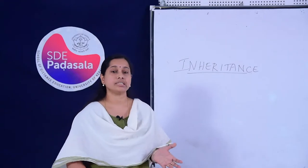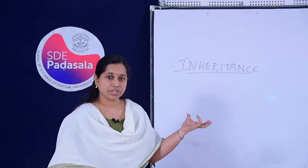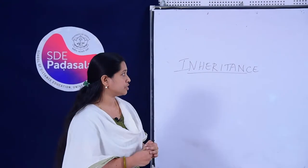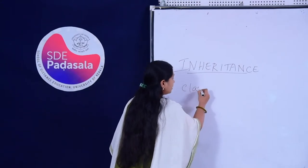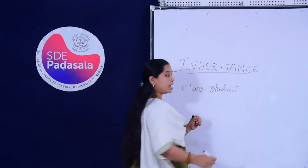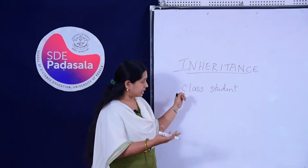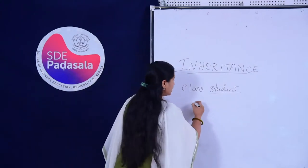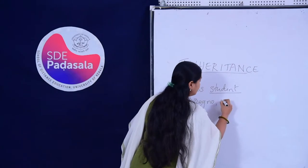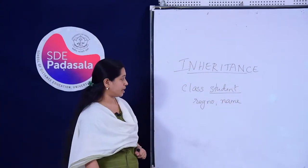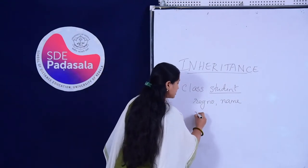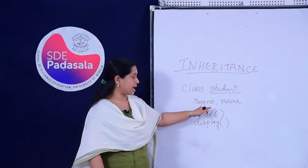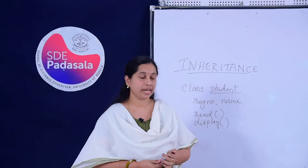Now we will see what is inheritance in object-oriented programming. In OOP, inheritance means the same concept. To understand it more clearly, first we should know what a class is. Here I am going to define a class called Student. A class, as you know, is a user-defined data type. This particular student class has two attributes: register number and name. These are two characteristics of the class, and it also has two functions: a read function and a display function.